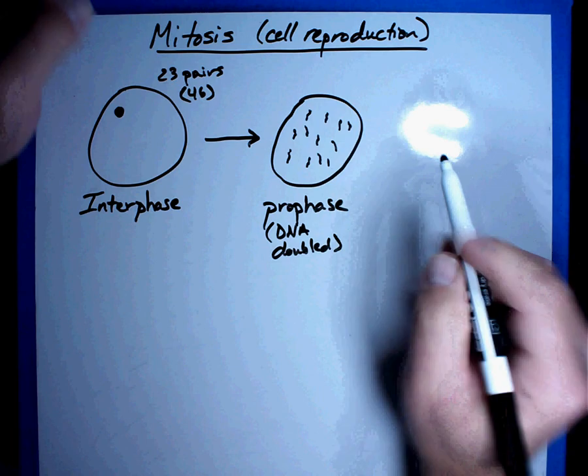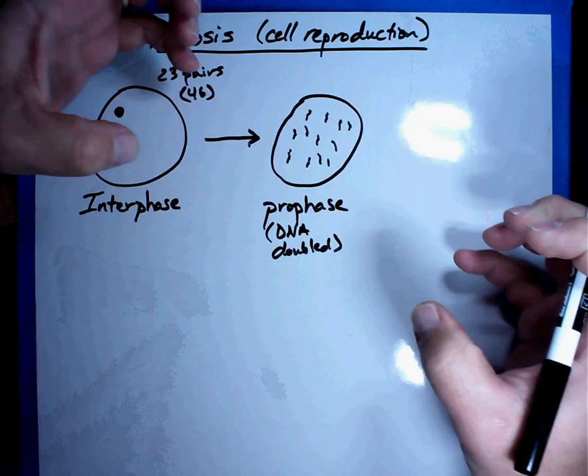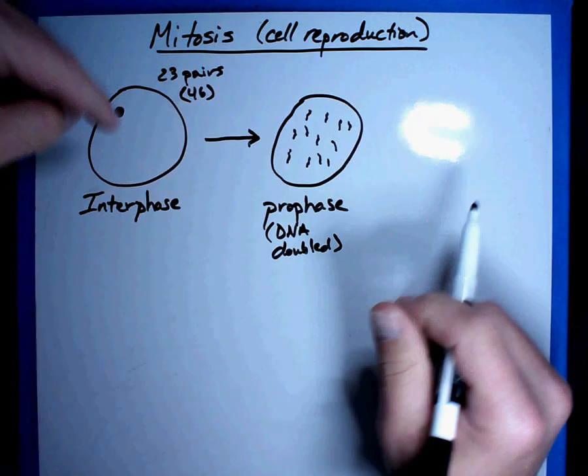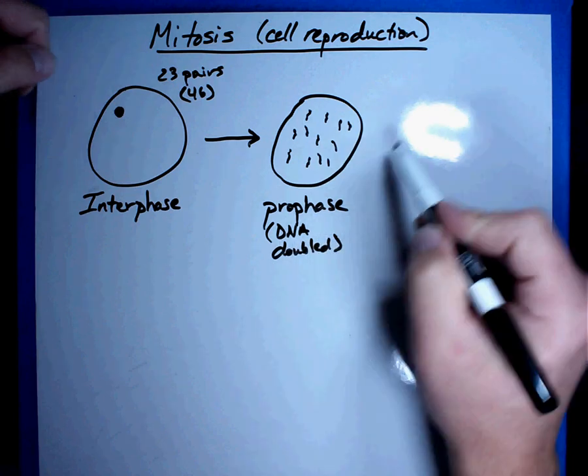Why would it do that? Because in a little bit we're going to take that cell and break it in half and now we have two cells that look just like the original. So my DNA has doubled, prophase.